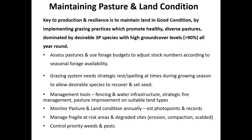The key to production and resilience is to maintain our land in good condition by implementing grazing management practices which promote healthy, diverse pastures dominated by desirable 3P species with higher levels of ground cover. We do that by regularly assessing and using forage budgeting to adjust stock numbers according to seasonal forage availability, and ensuring grazing systems incorporate strategic rest in the growing season to allow desirable species to recover and set seed. Management tools include fencing and water infrastructure, fire management, pasture improvement, managing fragile areas specifically, and controlling priority weeds and pests.